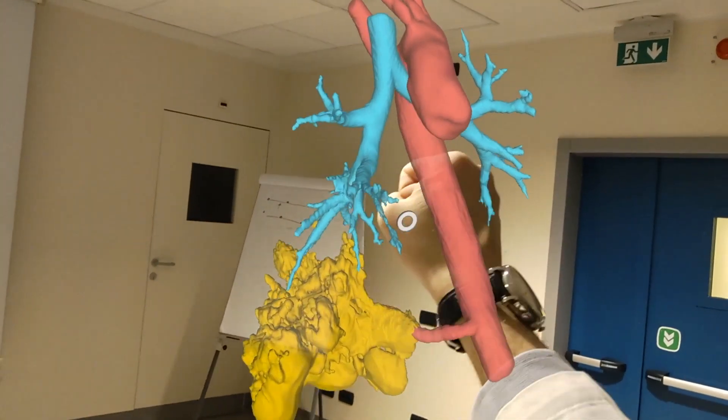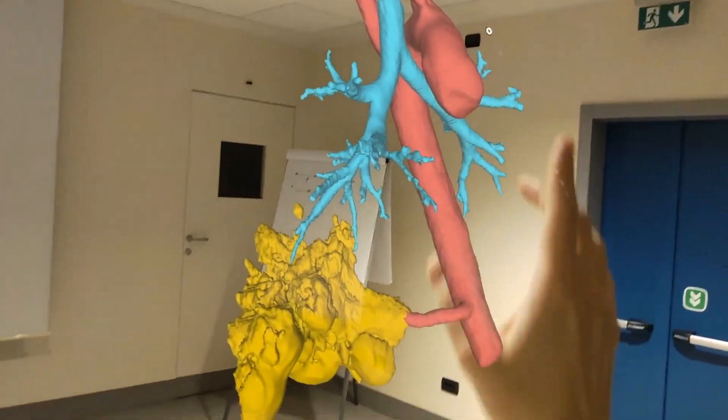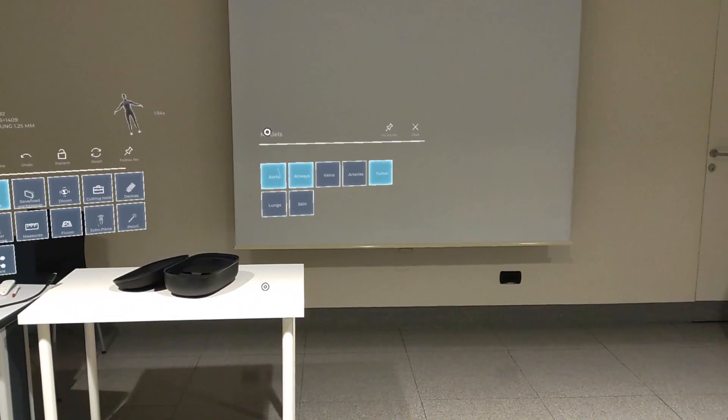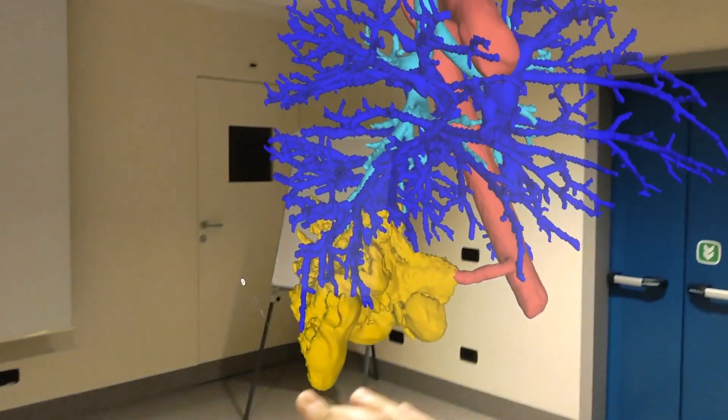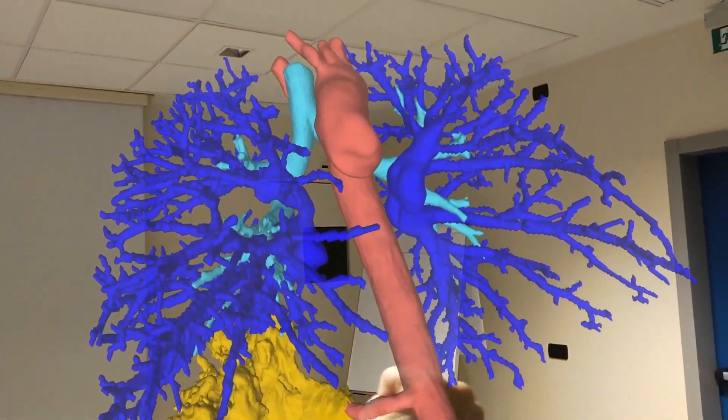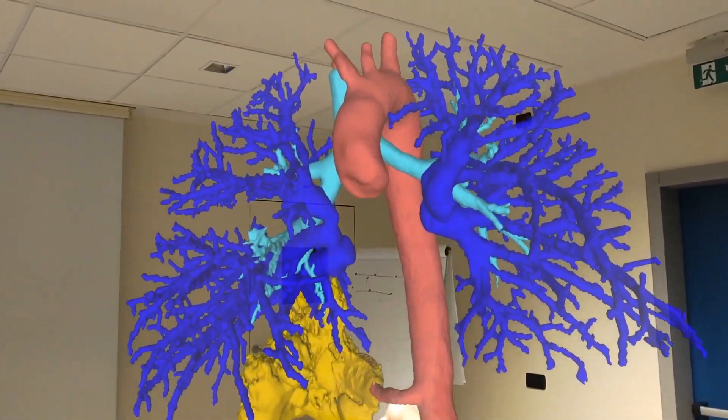After visualizing the pulmonary artery together with the bronchial tree to better localize the artery branches, we can remove the bronchial tree and focus only on the artery branches.